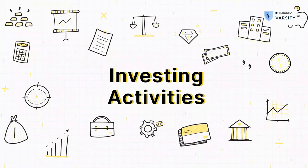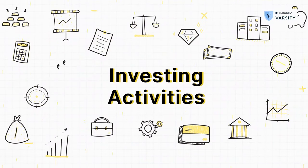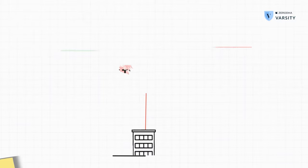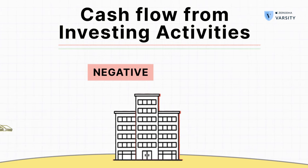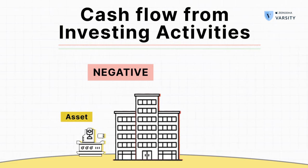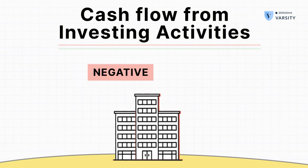The investing activity of a company is the sum total of all the capital expenditure that the company carries out to grow its business — things like investing in a new plant, building or acquiring new machinery. Just like the operating activity, the investing activity too can either generate or consume cash. Invariably, investing activity consumes cash, which means the company is reinvesting in itself. But if the investing activity is generating cash, that means the company is probably selling off assets and therefore producing a positive cash flow.